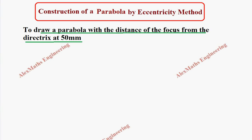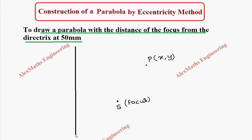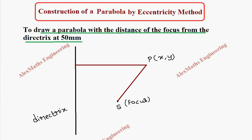The basics of conics: suppose there is a fixed point, we call this the focus and name it S. This point will not change its position. Let's also take a moving point P, which can move freely anywhere, and a fixed line called the directrix. If we join S and P we get the distance SP, and if we draw a perpendicular line from P to the directrix, meeting it at M, we get two distances SP and PM. The ratio SP by PM is known as the eccentricity.